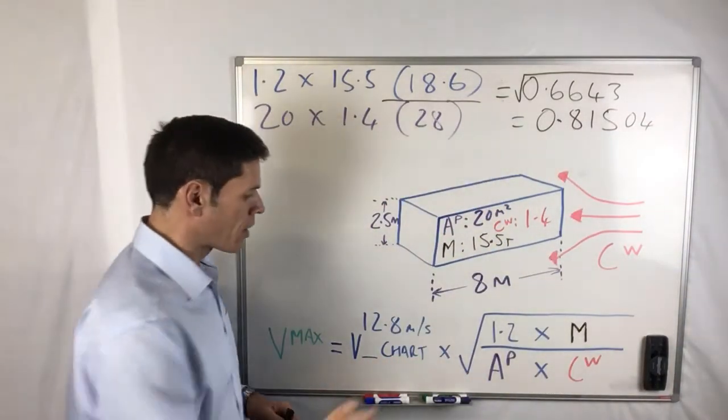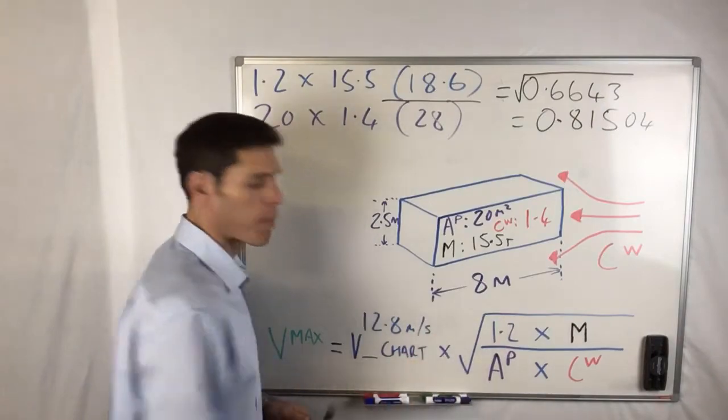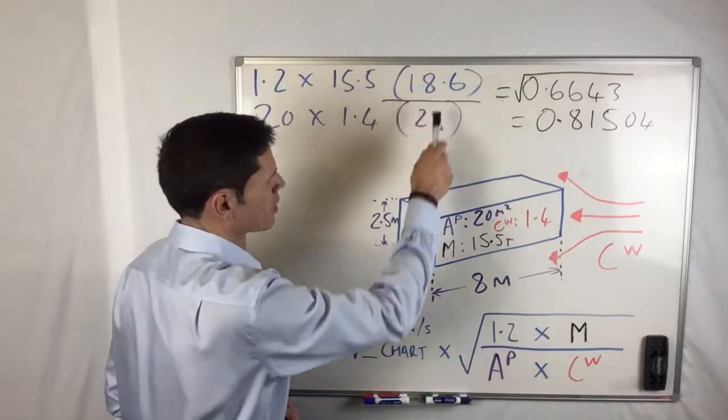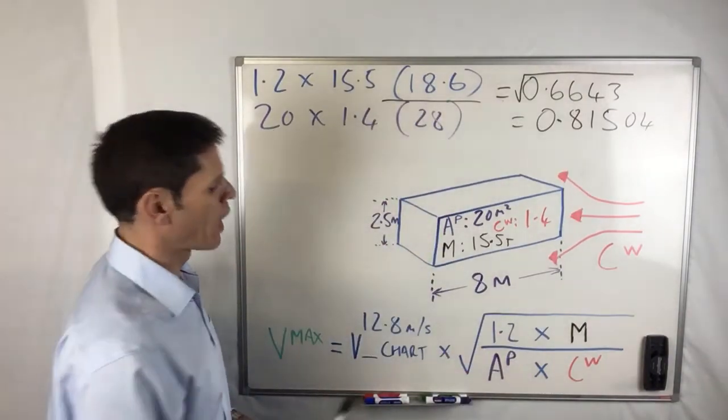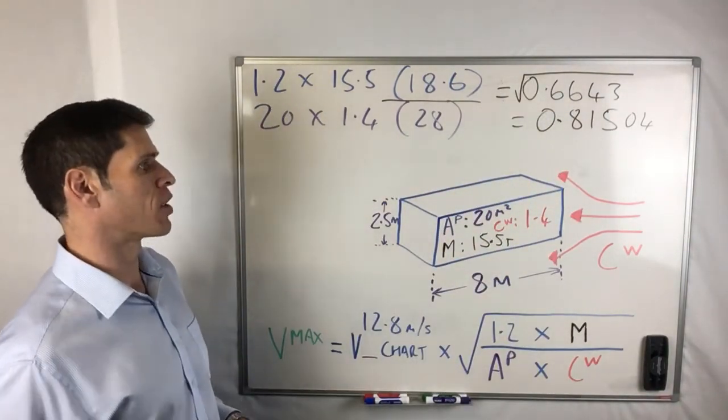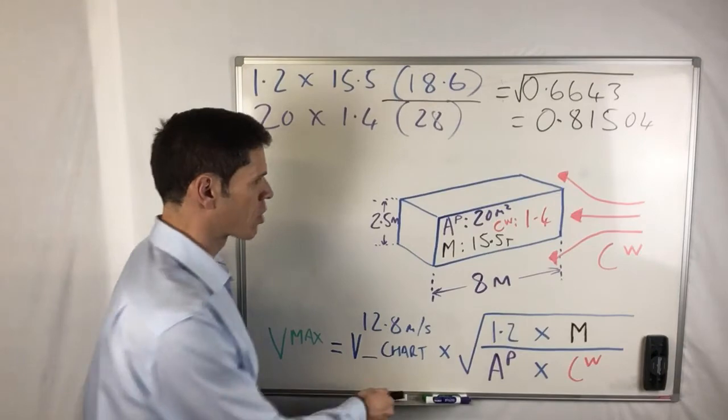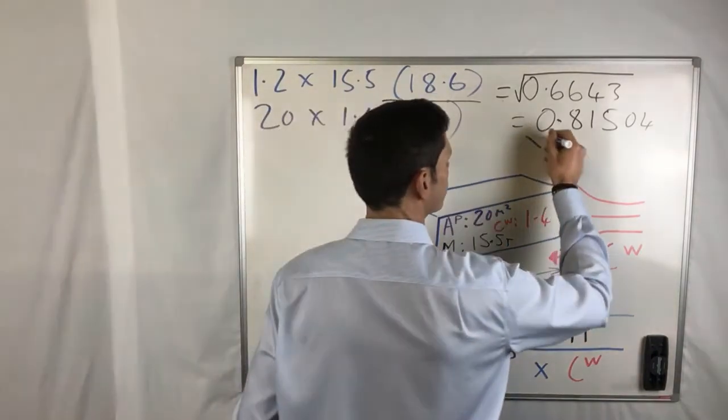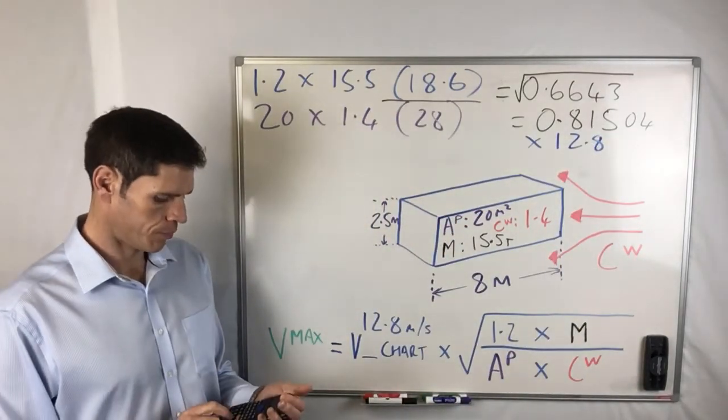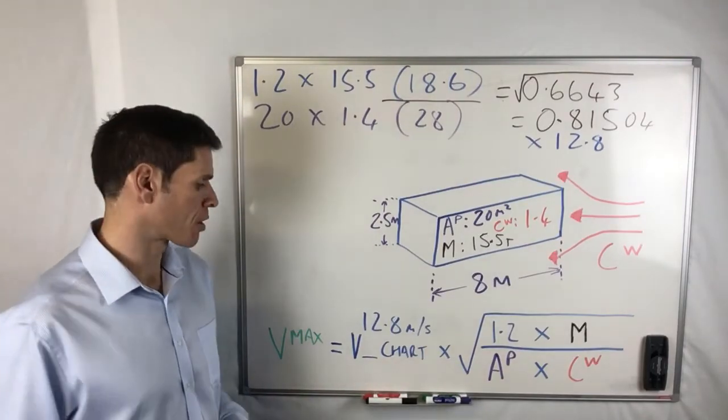The result of that then equals all this bit having been done. Quite simple, we just went the opposite way. We started there, got that, then we did that and got that, then we divide the top by the bottom which was this by this, then we square rooted it giving us the 0.81504. All we've got left to do is multiply it by that V chart value, so in this case by 12.8 meters per second. So multiply that by 12.8, and that gives us 10.43.